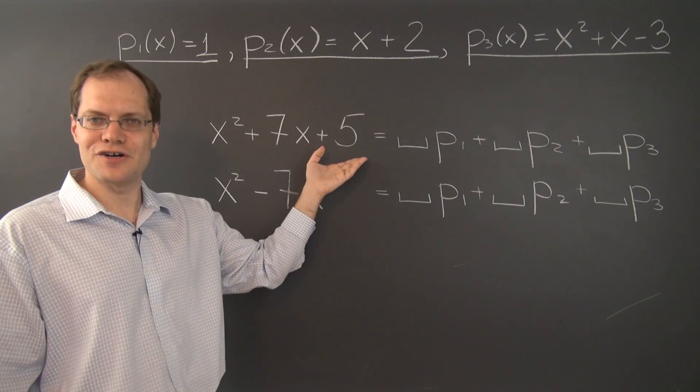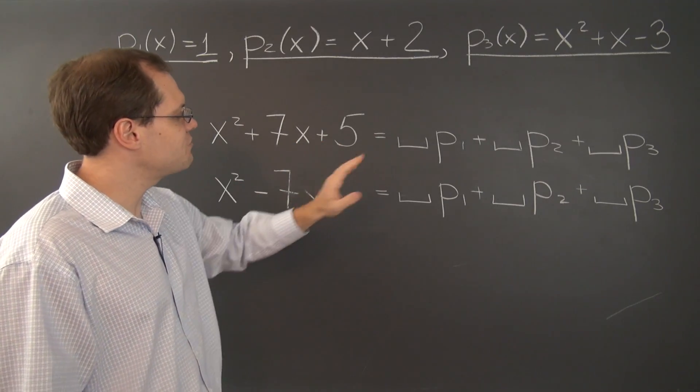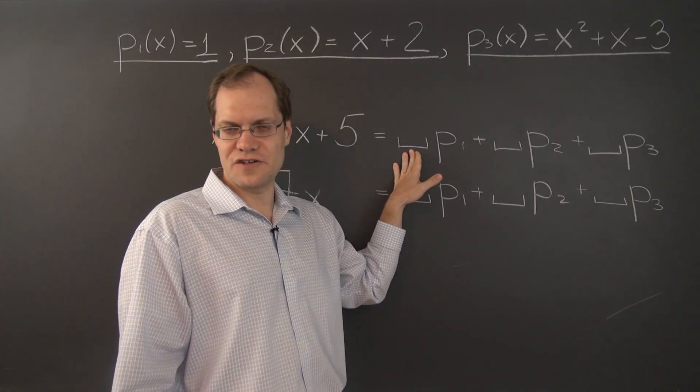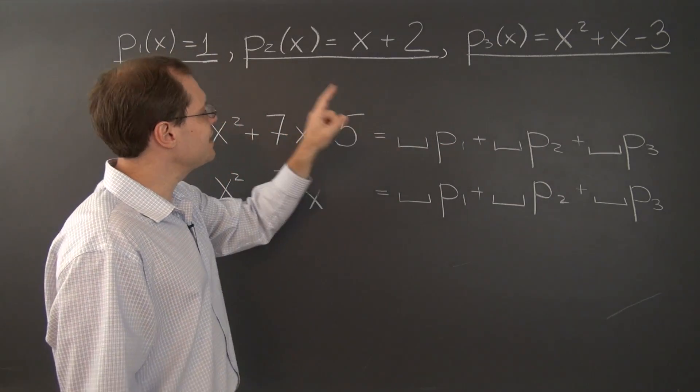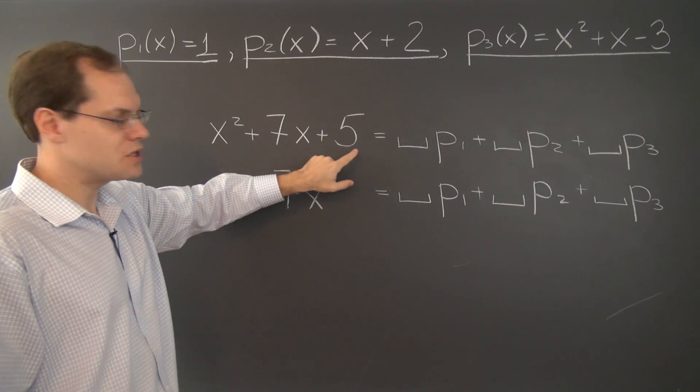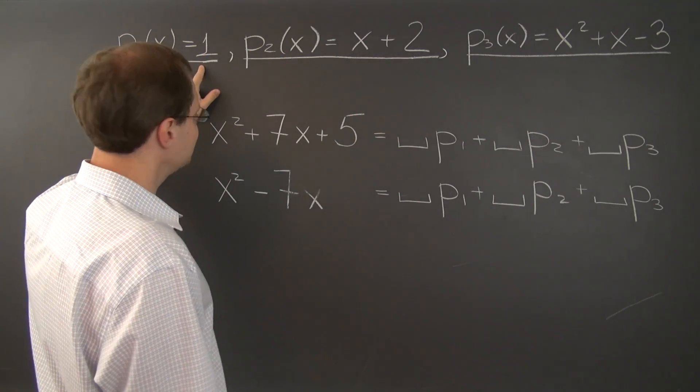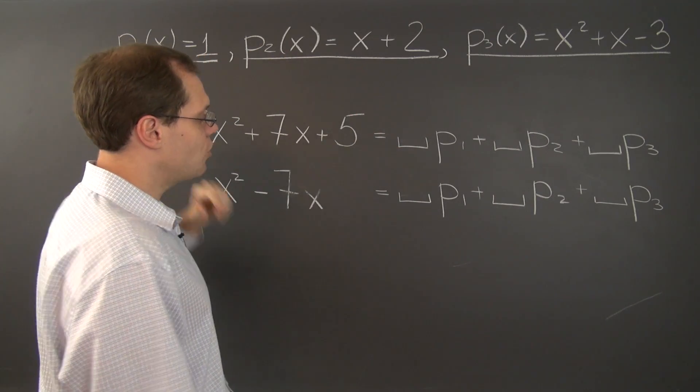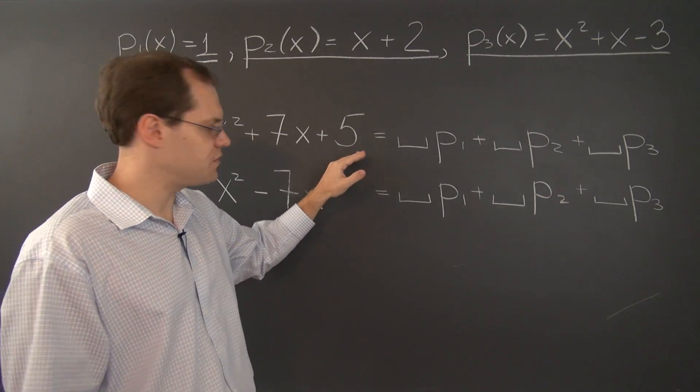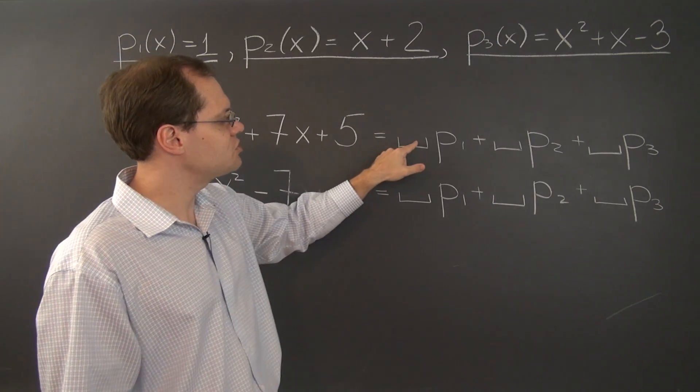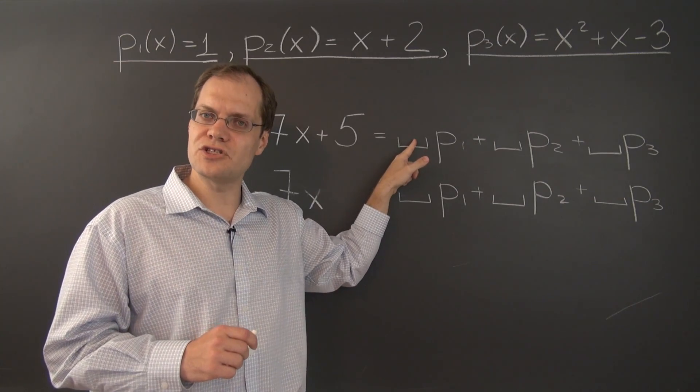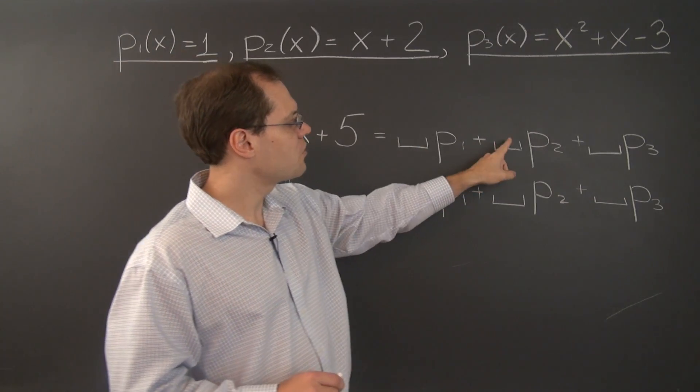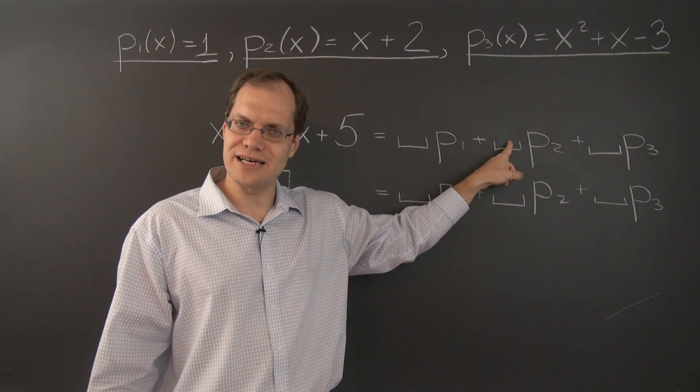Let's look at the first example first. And realize that if we went after this coefficient first, so we're looking at P1, we would have to conclude that it equals 5, because P1 only has the free coefficient. So our only chance to match the free coefficient in this polynomial is to set this coefficient to 5. We would be off to a good start. But then, when we go after this coefficient next,